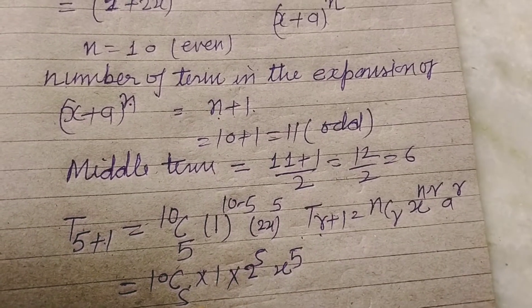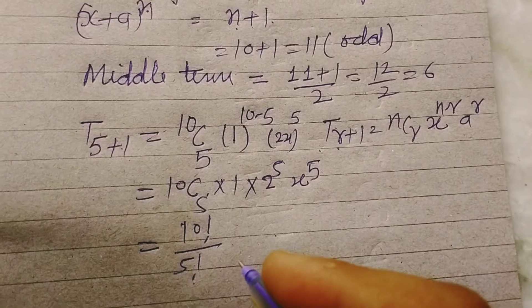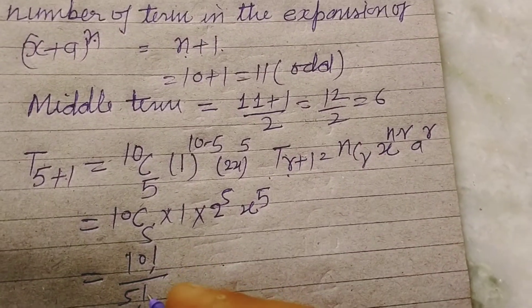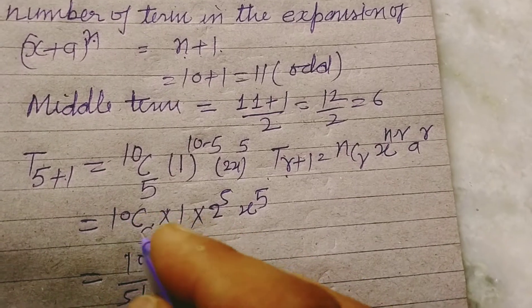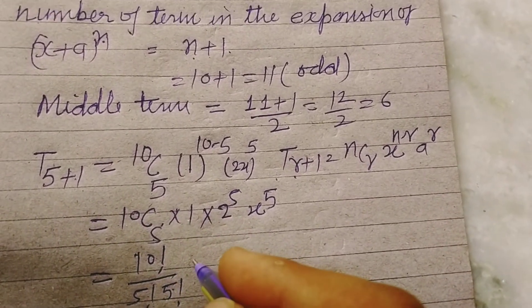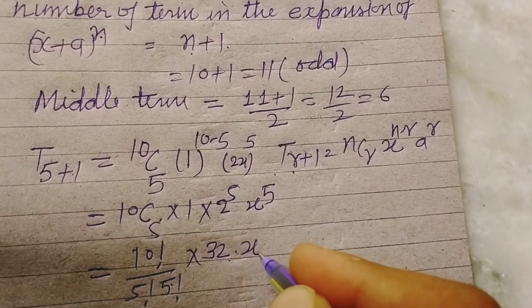On solving this, factorial 10 upon factorial 5 factorial 5. Because 10 minus 5 is 5. And 2 to the power 5 is 32, x to the power 5.